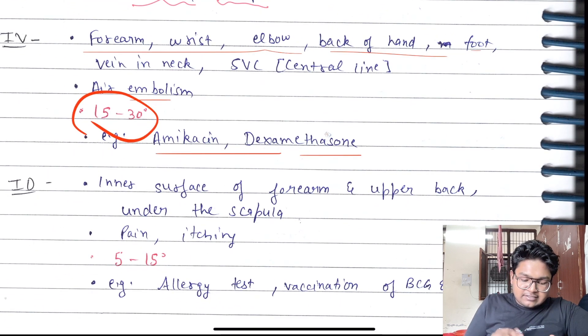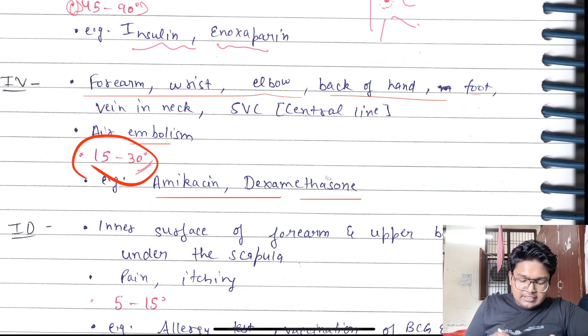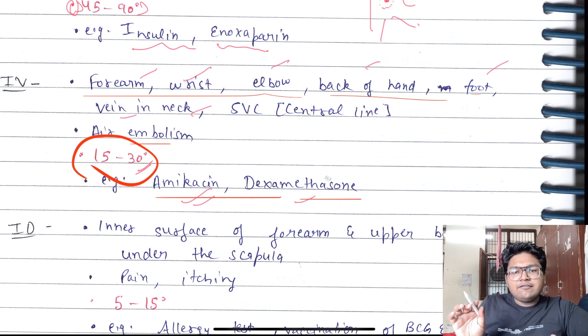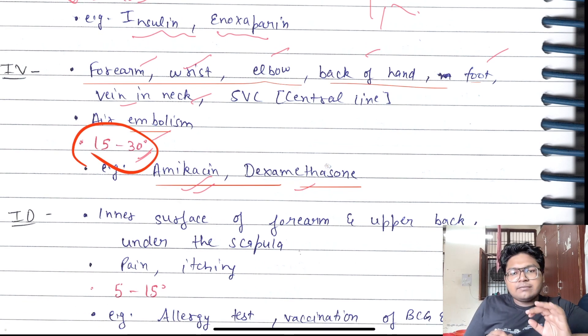In IV injection, the angle is 15 to 30 degrees. Amikacin, dexamethasone can be given. Forearm, wrist, elbow, back of hand, foot, vein in neck. Any vein you can access, just go and draw. Air embolism can occur; the chances of air embolism are very high.